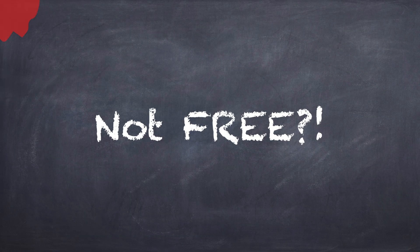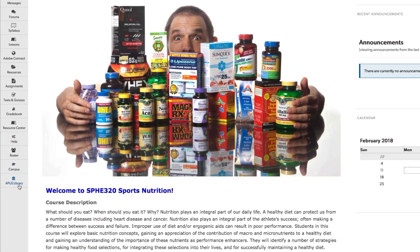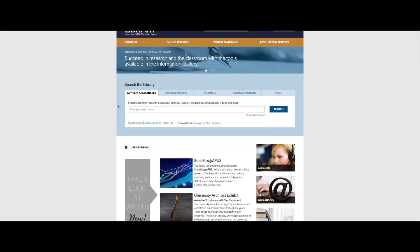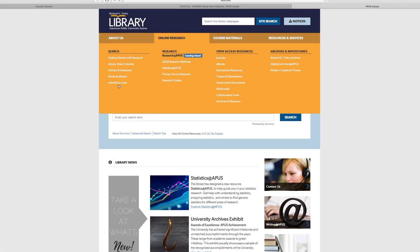If the article you seek is not available for free, log into your classroom and click on the APUS Library link. Then, search the university's databases for the article. If the journal is not part of the university's holdings, use Interlibrary Loan to receive a copy of the article. Please do not pay for articles.